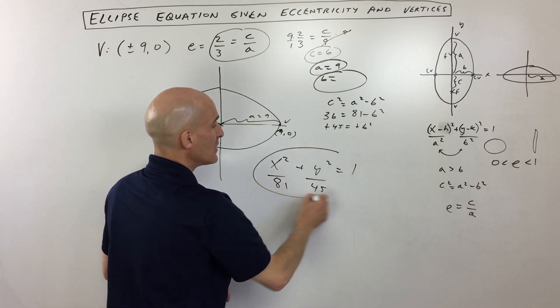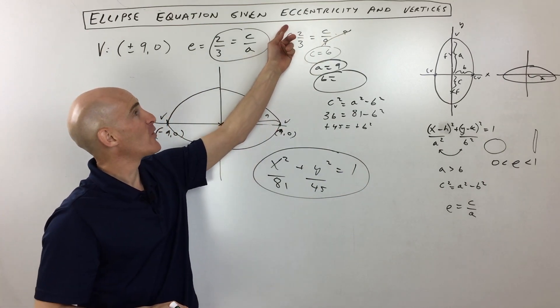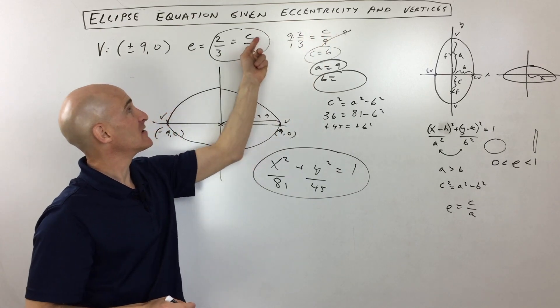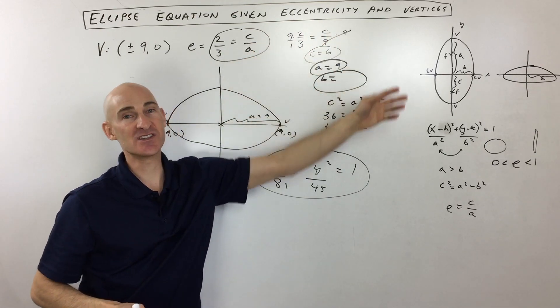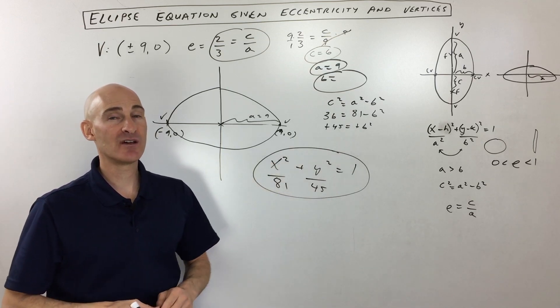So that was kind of a whirlwind tour on how to solve for the equation of an ellipse when you're given the eccentricity, c over a, and the vertices. So I hope that helped you understand how to work with these a little bit better. If it was kind of confusing, definitely check out the other videos that I did talking about ellipses.